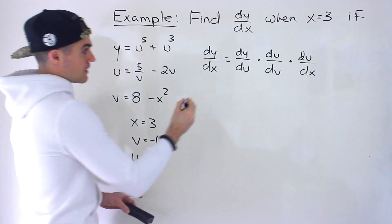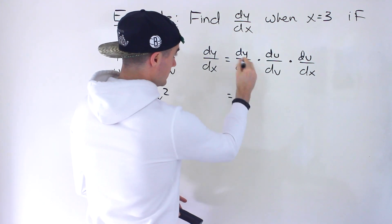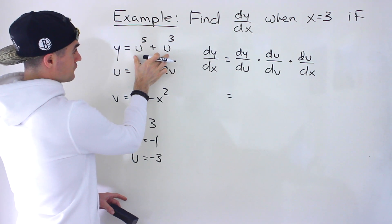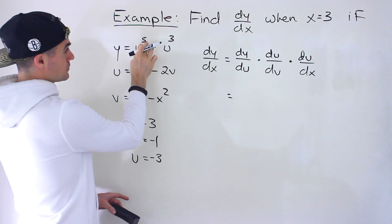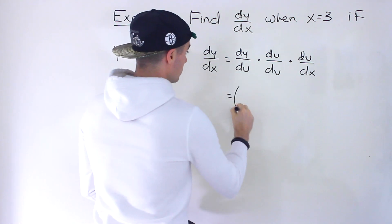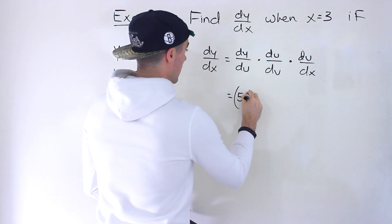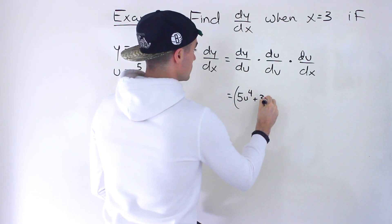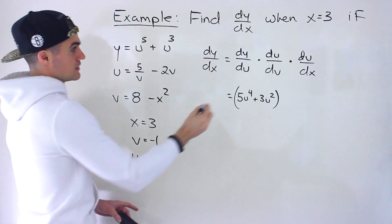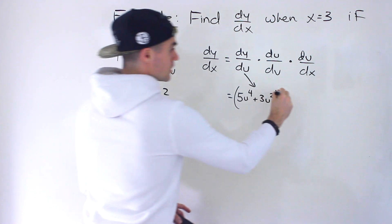Now we find dy/du — the derivative of y equals u⁵ plus u³. Using the power rule, we bring the 5 down to get 5u to the power of 4, plus 3u squared. That's dy/du.